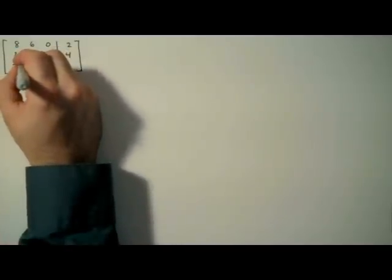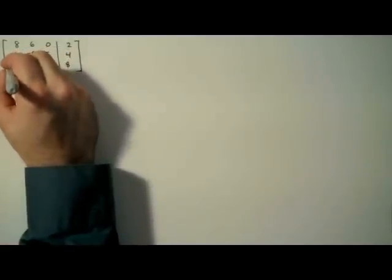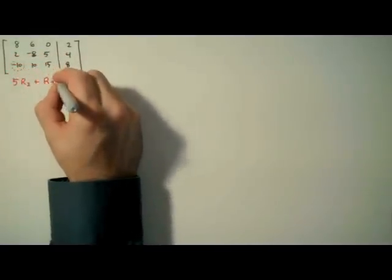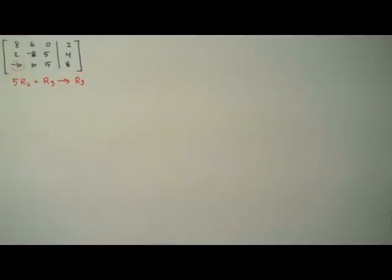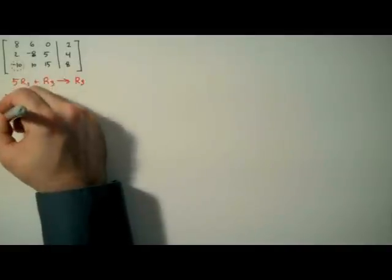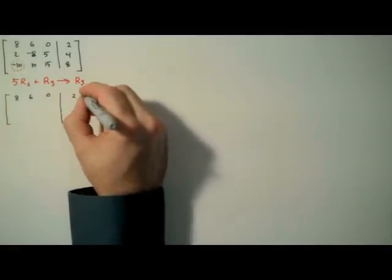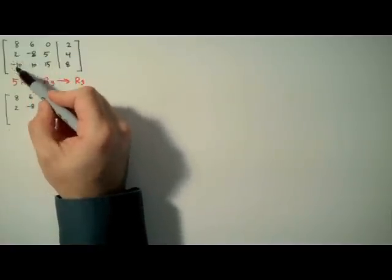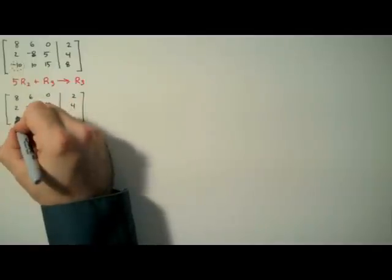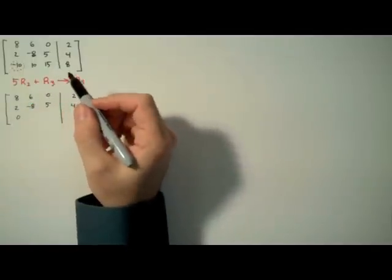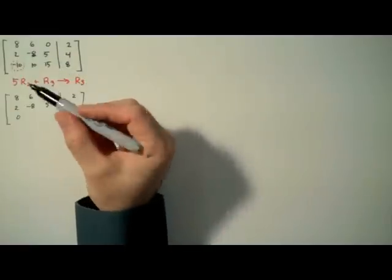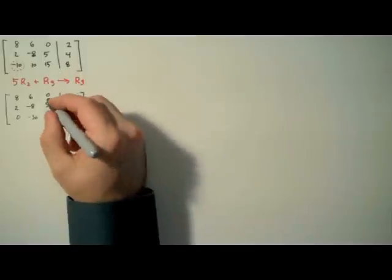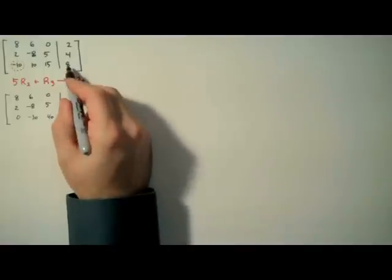Okay, let's begin. We'll start by targeting the lower left-hand entry. This negative 10 here needs to be a zero. The way we'll accomplish that is using row addition. We're going to multiply row 2 by 5 and add row 3 to it, replacing row 3 with the result. Since we're not operating on the first two rows though, we'll just rewrite them. Now we'll do 5 times 2 plus negative 10 gives us zero, which is exactly what we wanted. Now we do 5 times negative 8 plus 10 gives us negative 30. 5 times 5 plus 15 gives us 40. 5 times 4 plus 8 gives us 28.